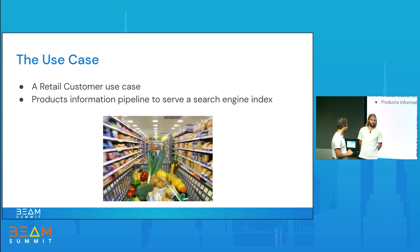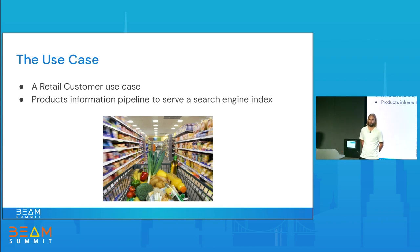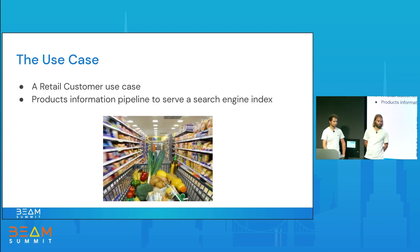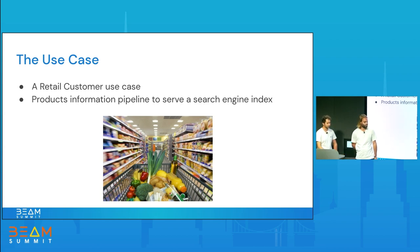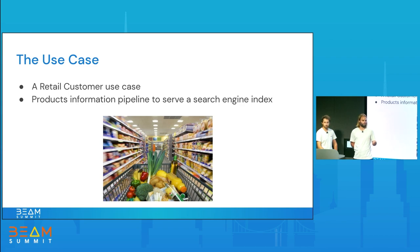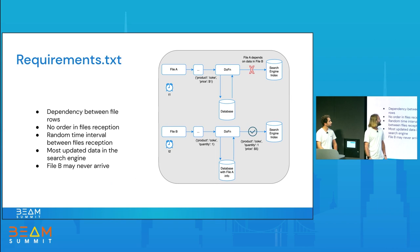We implemented a streaming pipeline to populate a search engine index. Imagine you're responsible for a store or supermarket and you need an up-to-date data platform with product details like prices and quantities. We have a main data stream that we need to enrich with many other sources. For example, we may need to know the quantity of a product to adjust its price.